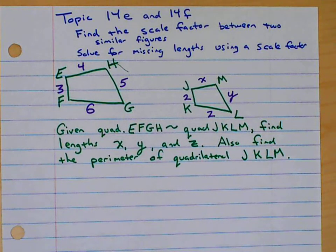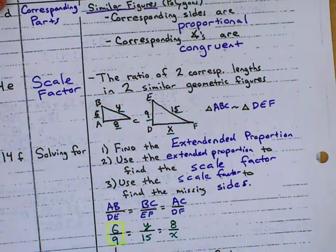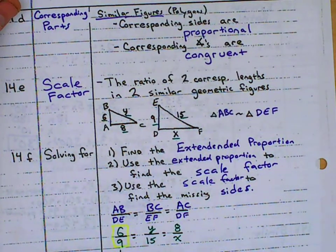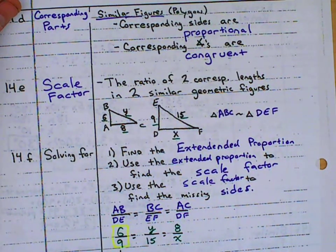Find the scale factor between two similar figures, or solve for missing lengths using a scale factor. So in this case, we're going to use extended proportions to do that, but really, this problem really fits well into 14f, where we're solving for missing sides.